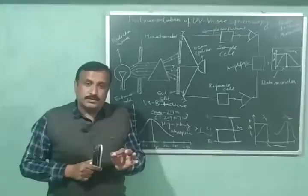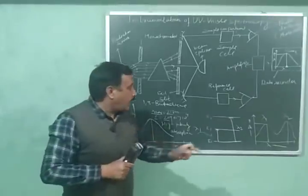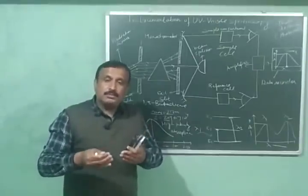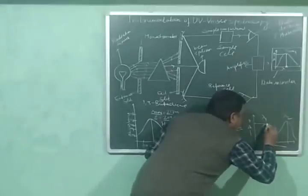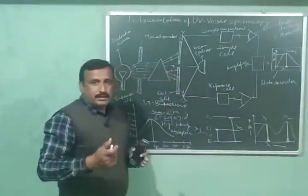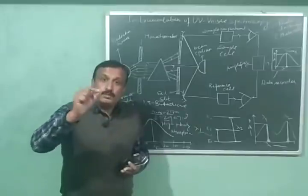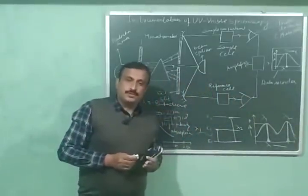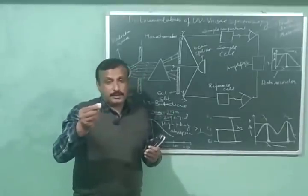We obtain broad peaks, or broad bands, in the UV-visible spectrum rather than sharp peaks. In theory, we should observe two sharp peaks — one at λ1 and one at λ2 — since those are the wavelengths of maximum absorbance. However, in practice, broad bands are observed. I will explain the reason for this band nature of the UV-visible spectrum in my next video.